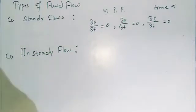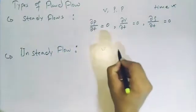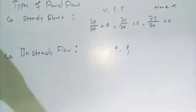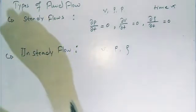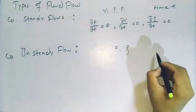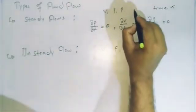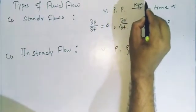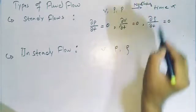Unsteady flow is defined as the type of flow in which the velocity, pressure, and density of a fluid change with respect to time.